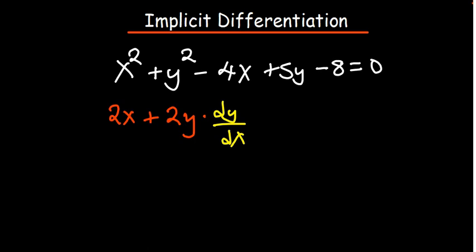Okay. And then minus 4x. The derivative of minus 4x is negative 4. The derivative of 5y is 5. Now, we've differentiated y. So, I'll put dy/dx again. That is the only thing that you need to remember. Very important. The derivative of a constant is always 0. So, we just remain with 0 on the right-hand side.